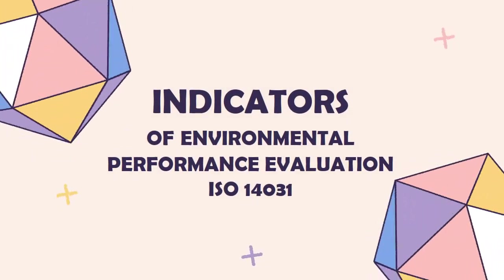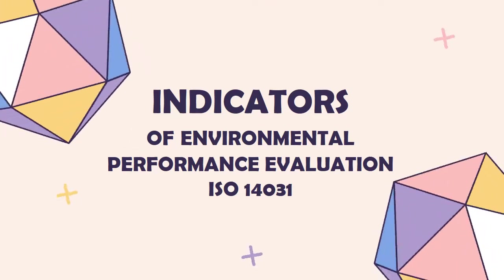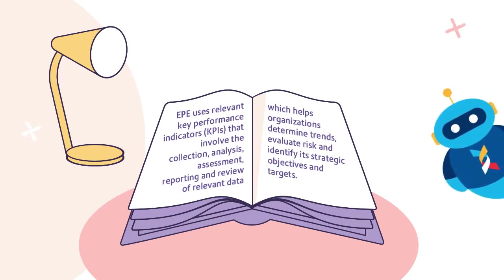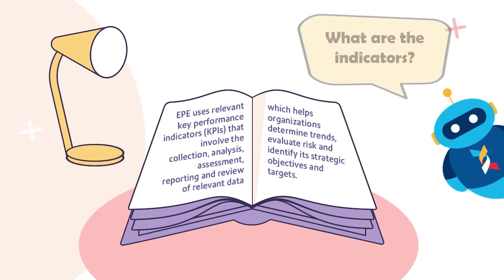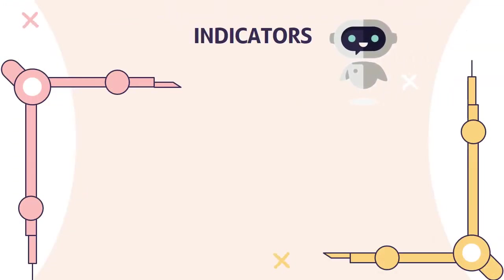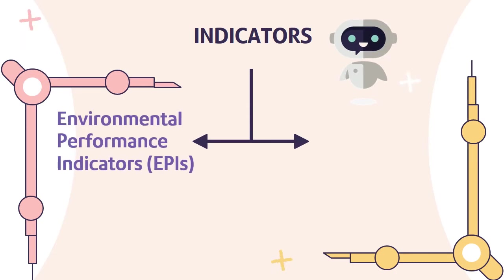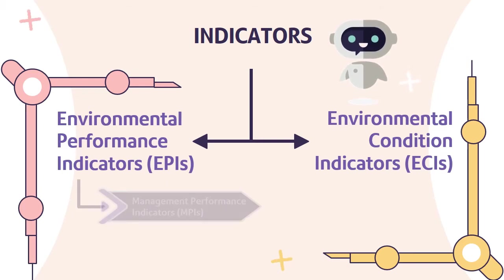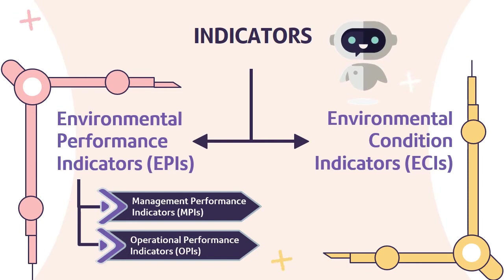Indicators of Environmental Performance Evaluation ISO 14031: EPE uses key performance indicators to help organizations determine trends, evaluate ways, and identify strategic objectives and targets. As described in ISO 14031, EPE indicators are divided into two categories: Environmental Performance Indicators (EPI) and Environmental Condition Indicators (ECI). Environmental Performance Indicators consist of Management Performance Indicators (MPI) and Operational Performance Indicators (OPI).